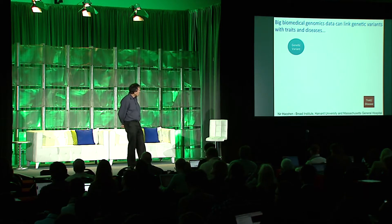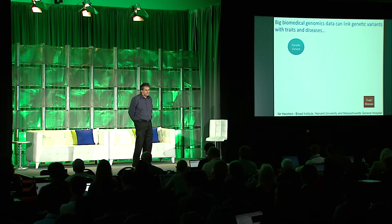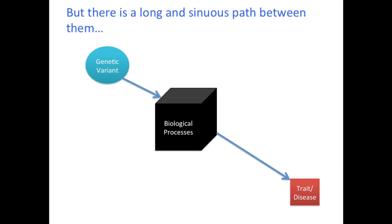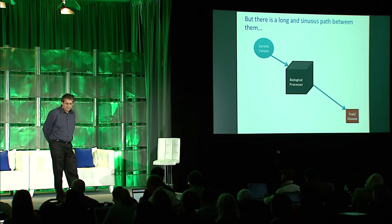As a systems immunologist, my goal is to understand and have a more complete picture of the immune system. One of the ways we do that is to link genetic variants with traits or diseases across human subjects. There's quite a long path between the genetic variant and the trait, even though you've linked them. What we're interested in is that middle part, that black box, and asking how we can use big data to break into that black box and really understand the molecular and cellular networks that link the genetic variants to the trait of the disease.